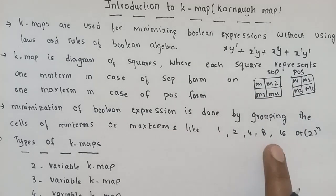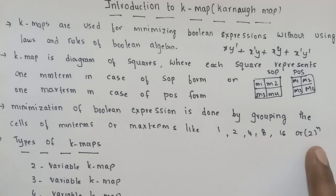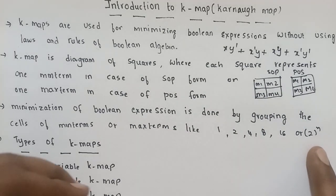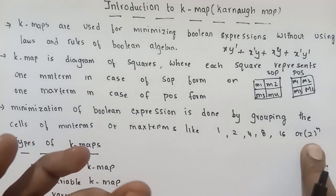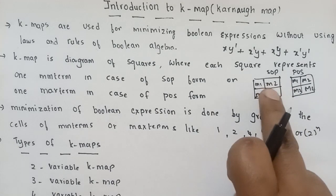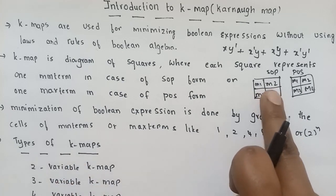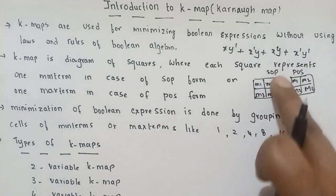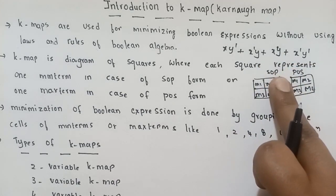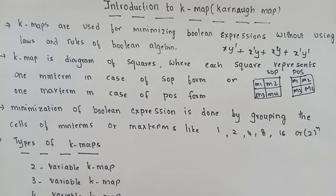That grouping is in the order of 2 power N — 2 power 0, 2 power 1, 2 power 2, 2 power 3, 2 power 4, and so on. K-map size: groups of 2 power 0 equal 1 cell, 2 power 1 equal 2 cells, 2 power 3 equal 8 cells. Only adjacent cells can be combined to get a minimum expression.